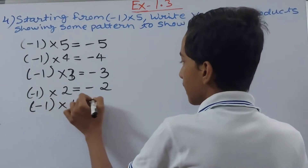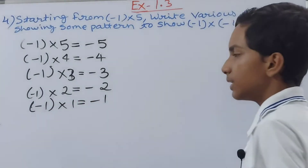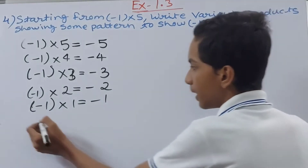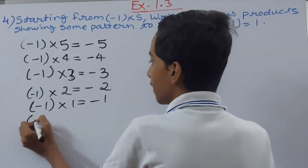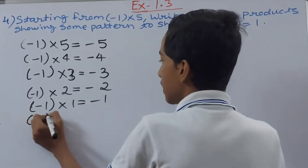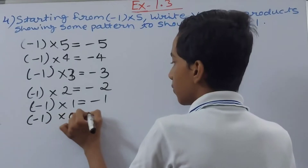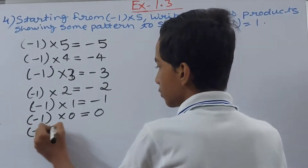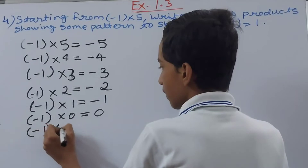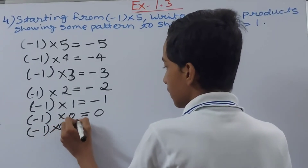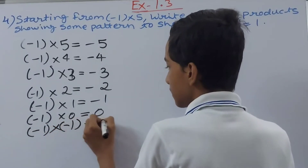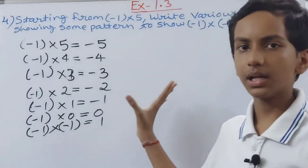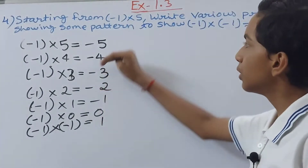-1 × 1 = -1. Now we move on: -1 × 0 = 0. And finally, -1 × (-1) = 1. This is how we make our pattern, starting from -1 × 5 and going all the way to -1 × (-1).